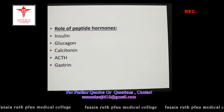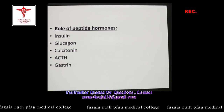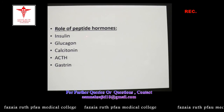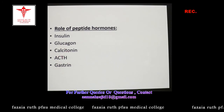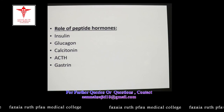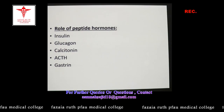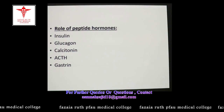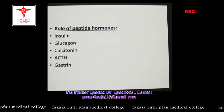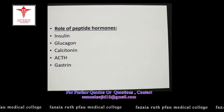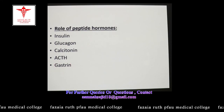Some hormones circulating in the blood are peptide in nature, such as insulin, glucagon, calcitonin, ACTH, and gastrin. Insulin and glucagon are involved in glucose metabolism; calcitonin is involved in calcium homeostasis; ACTH stimulates the adrenal cortex to produce cortisol; and gastrin stimulates parietal cells in the stomach to produce hydrochloric acid and also increases gastric motility.